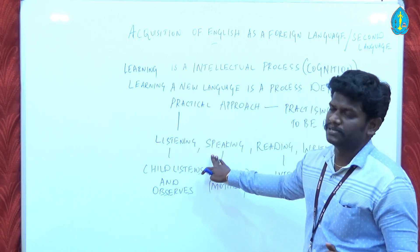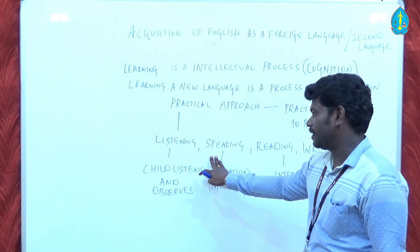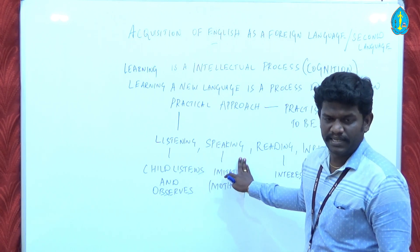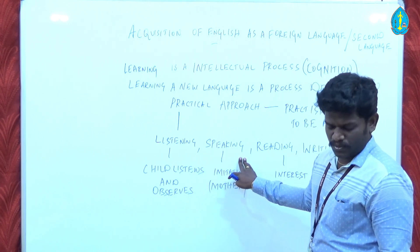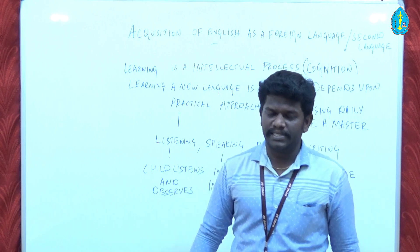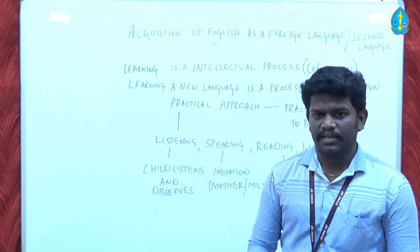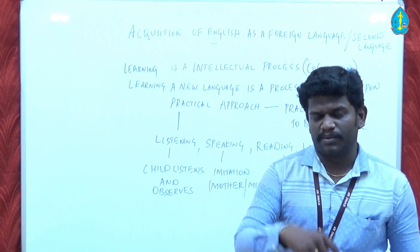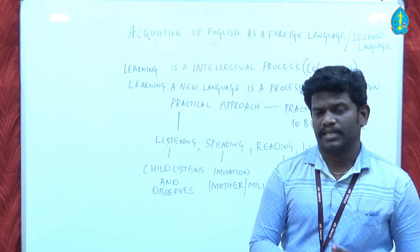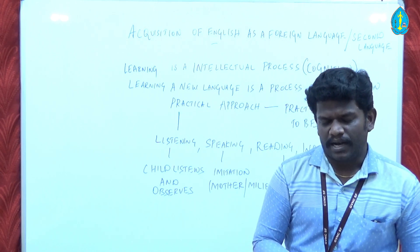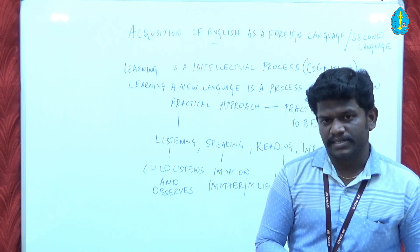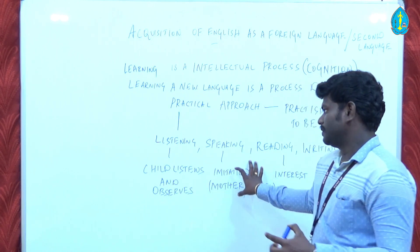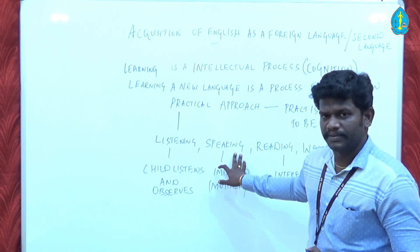The second step is: how is it possible to speak? For that, you have to take the process called imitation. What can we call imitation? Imitation is nothing but you have to imitate the native speaker — how their pronunciation is. If you are minutely observing and listening with the imitation skill, you can easily speak the language.